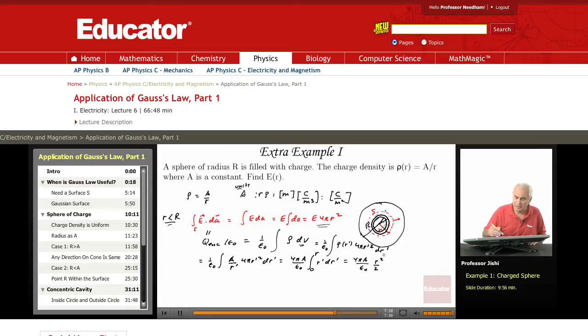We end up with E times 4π R squared equals 4π A R squared over 2. Canceling 4π R squared, we get E equals A over 2ε₀. Constant electric field here.